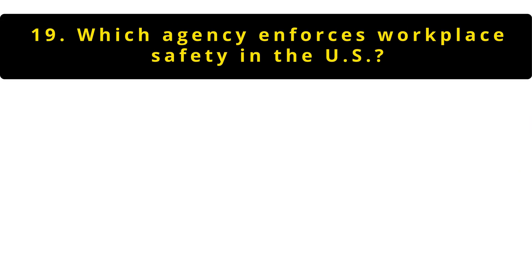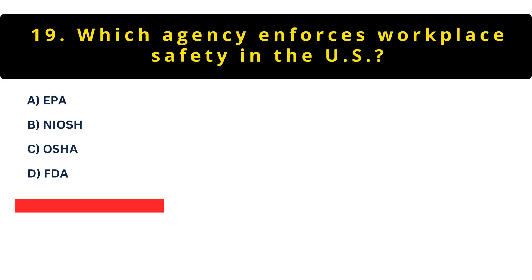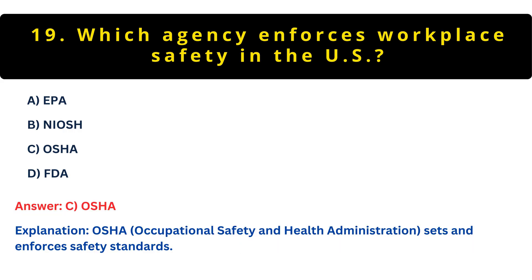Question 19: Which agency enforces workplace safety in the U.S.? The correct answer is C — OSHA, the Occupational Safety and Health Administration. While NIOSH researches safety issues, OSHA is the enforcement agency that can issue citations and penalties for violations.